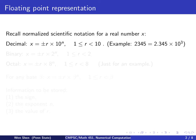Let's recall something we probably have learned earlier, called scientific notation to represent a real number. So let's say the number is x, consider it in a decimal base. x is a decimal number, so we can write it as plus or minus r times 10 to the power n, where 10 is the base. This number r typically takes a value between 1 and 10, strictly less than 10. For example, the number 2345 can be written as 2.345 times 10 to the power 3.